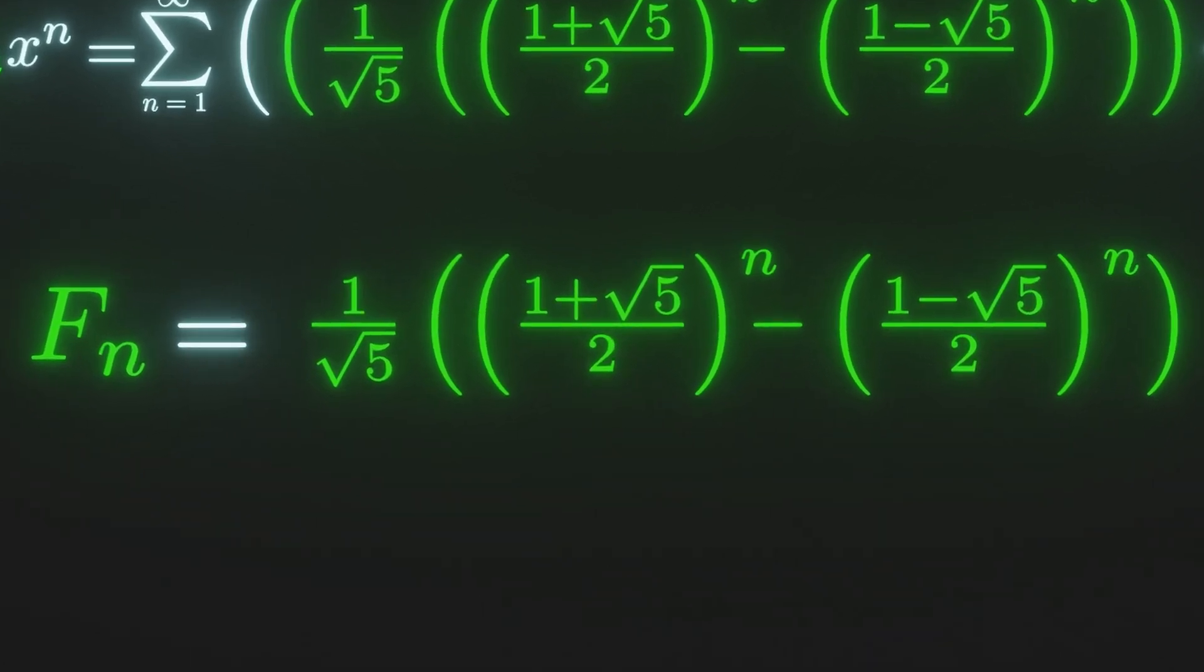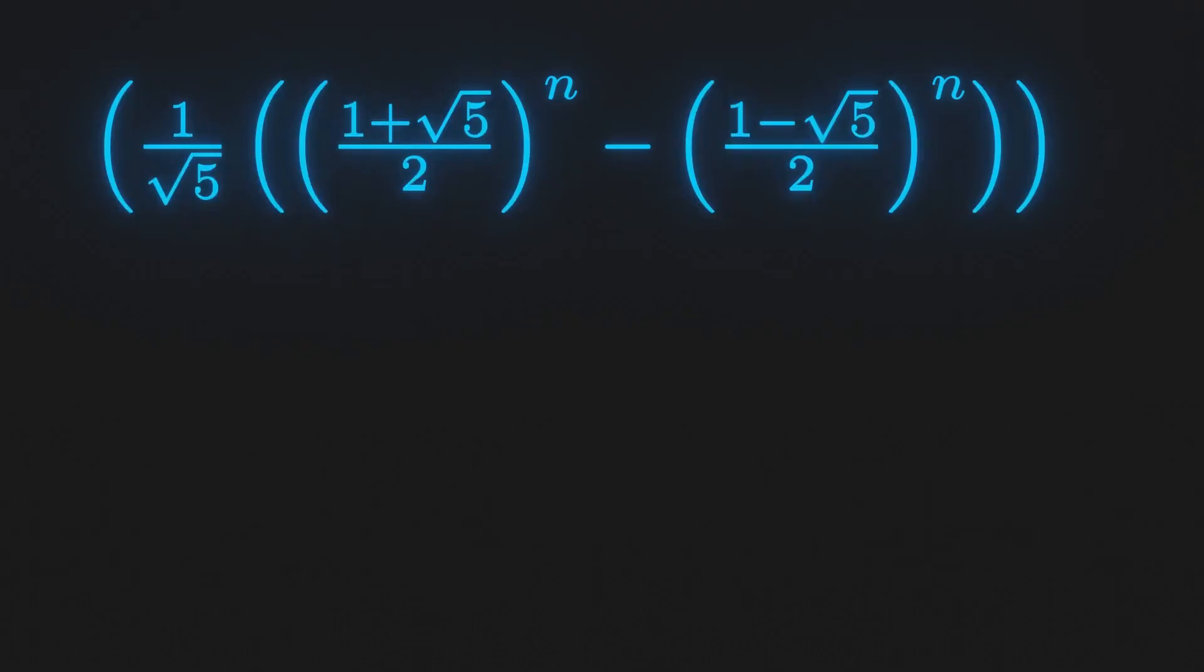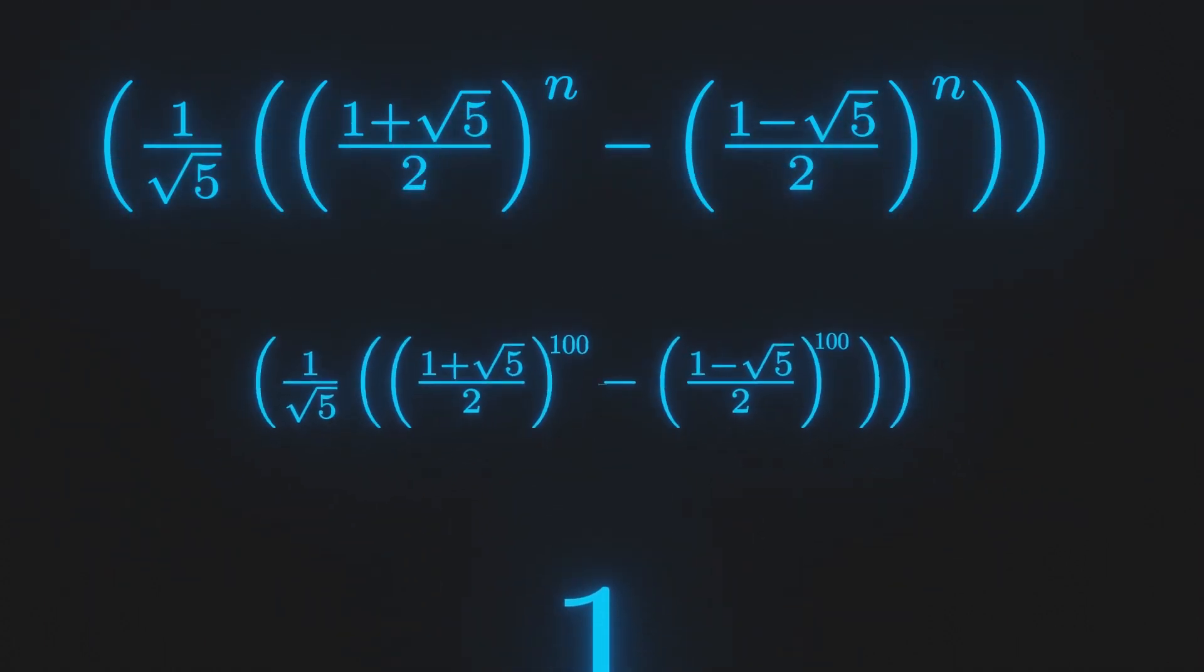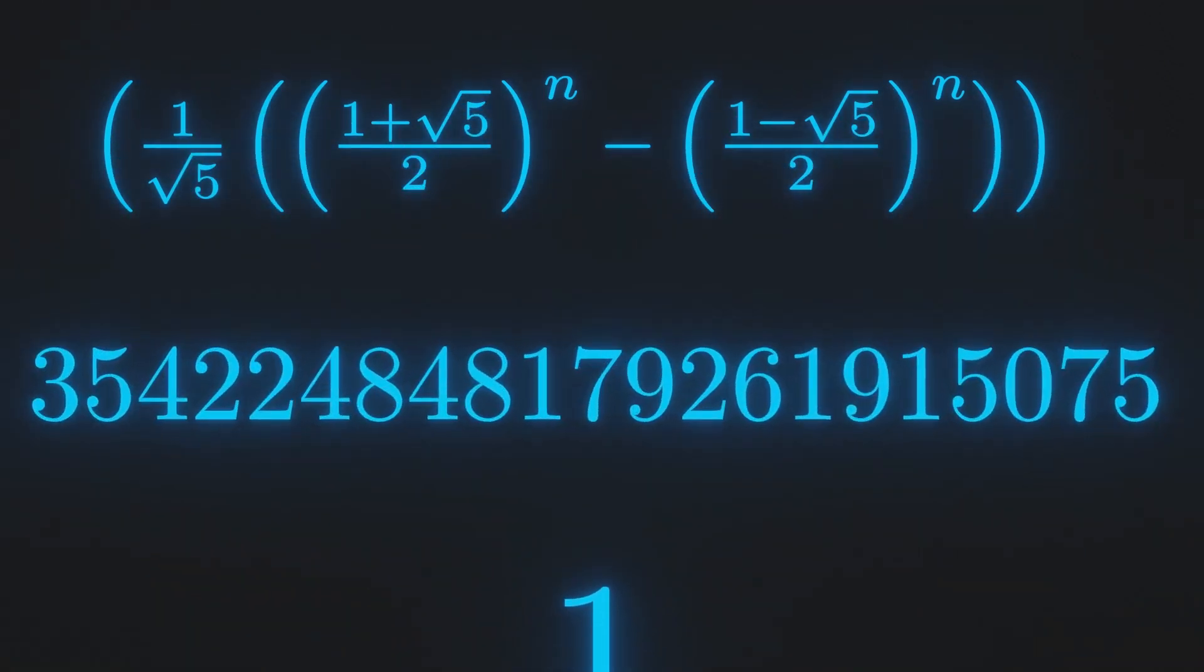This is known as the Binet formula. We can plug in things for n to get the nth term of our sequence. We can try plugging in 1, and we see that we do get our first term 1. But now that we have a formula, we can calculate the hundredths term without having to calculate the ones before.